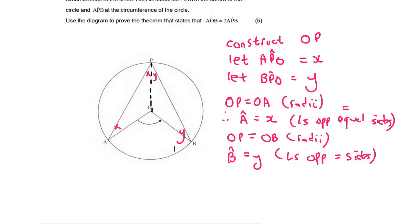Then what we do is we use sum of angles in the triangle to calculate this angle here. So we can say that angle AOP is going to be equal to 180 minus X minus X. And that's just because of sum of the angles in a triangle. And so we can say that AOP is equal to 180 minus 2X.